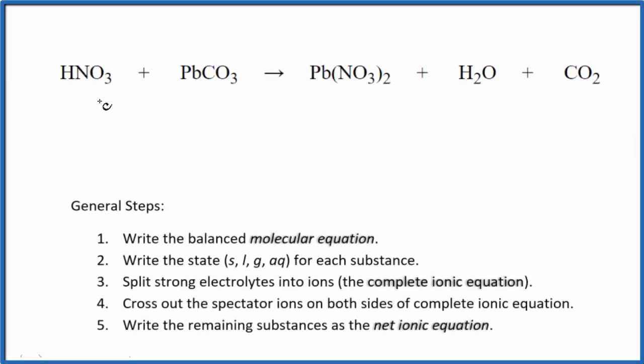To write the balanced net ionic equation for HNO3 plus PbCO3, we'll use these rules here. First, we need to balance the molecular equation. It looks like we have two nitrates here and only one here. So if we put a two here, that'll fix the nitrates, and it turns out that fixes everything else. So this is the balanced molecular equation.